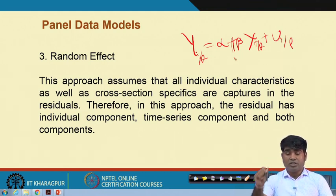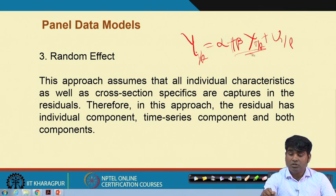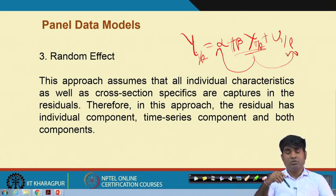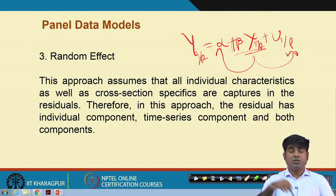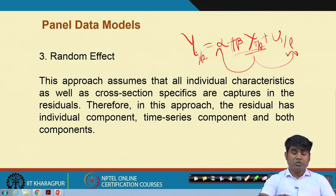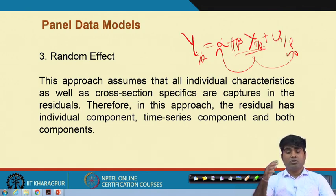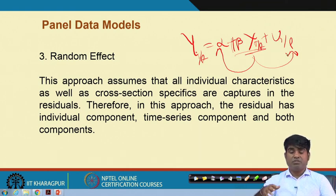The time effect and cross-sectional effect will either come to the intercept side or go to the error term. If that particular impact is studied through the intercept, that is technically called the fixed effect model. If that impact goes to the error term while keeping the intercept constant, then the particular model is called the random effect model. When you want to capture the time series impact and cross-sectional impact, there are only two ways: the impact either goes to the intercept or goes to the error term. If you allow the impact to go to the intercept — not to the error term — that structure is called the fixed effect model.